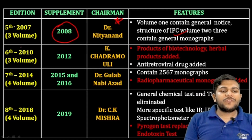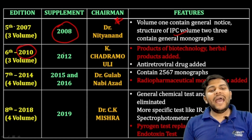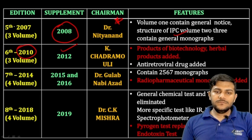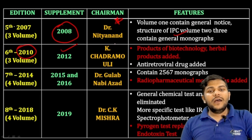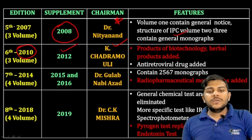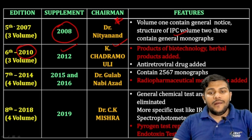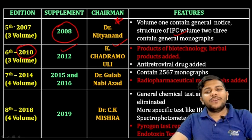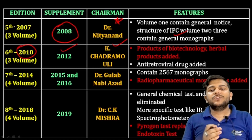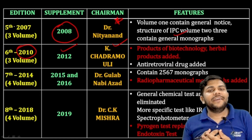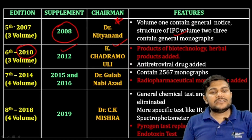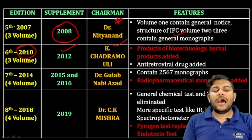The sixth edition was published in 2010, also having three volumes, with a supplement in 2012. The chairman was K. Chandramoli. Biotechnological products, herbal products, and antiretroviral drugs were added in this sixth edition.